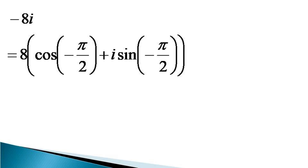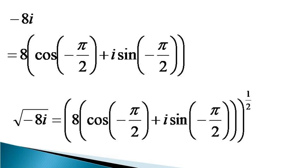The square root of minus 8i will become equal to 8 into [cos(−π/2) + i sin(−π/2)] whole raised to the power 1/2. So how do we evaluate this expression raised to the power half?